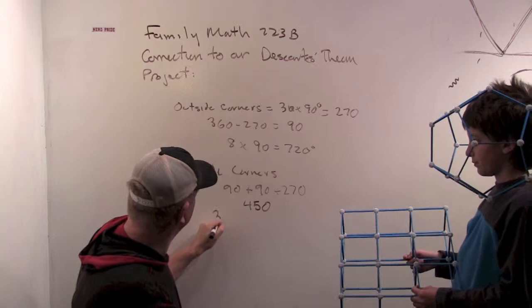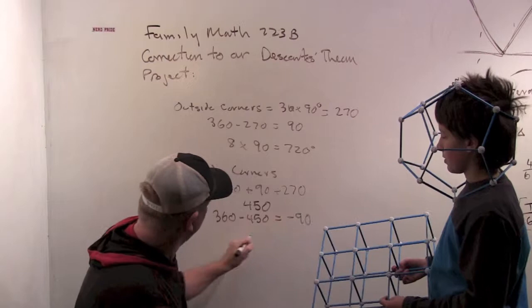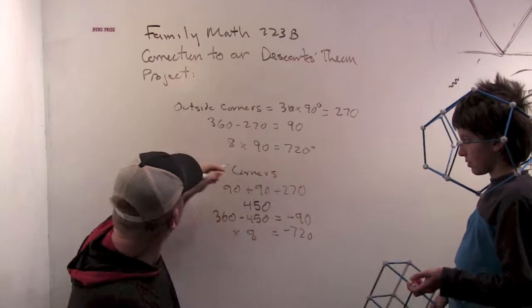And what is 360 minus 450? It's minus 90. And minus 90 times 8 is? Minus 720. 720. So our sum is zero. 720 plus 720. Zero degrees.